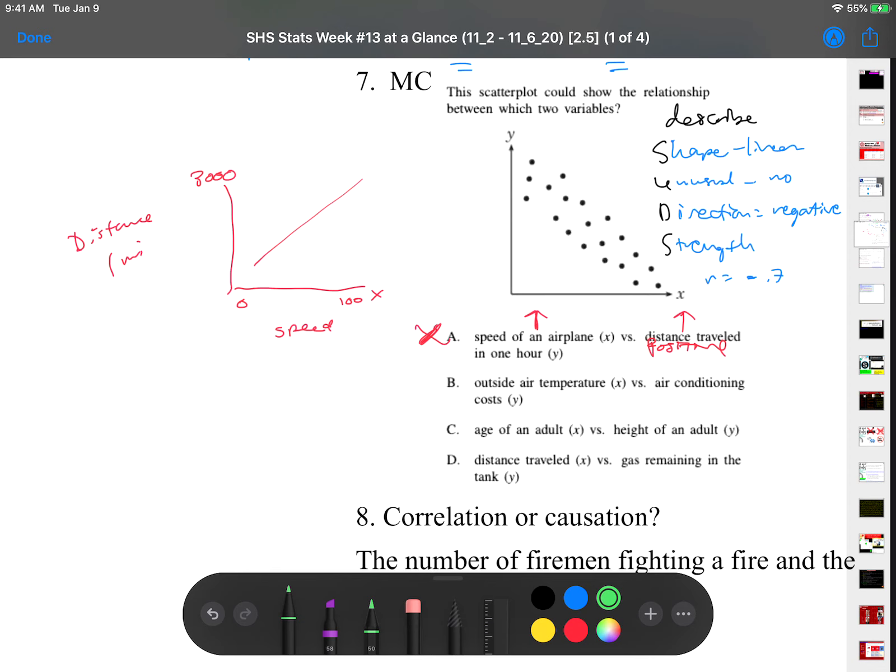Let's do the green one. Outside temperature versus air conditioning cost. If it's cold, let's say right now it's like 50 degrees outside, my cost is also going to be low. But if my temperature outside, and tomorrow it's supposed to be really hot, like 100 degrees, then my costs are going to be high. So as the outside temperature increases, air conditioning also increases. This would be a positive relationship, which doesn't match our graph.